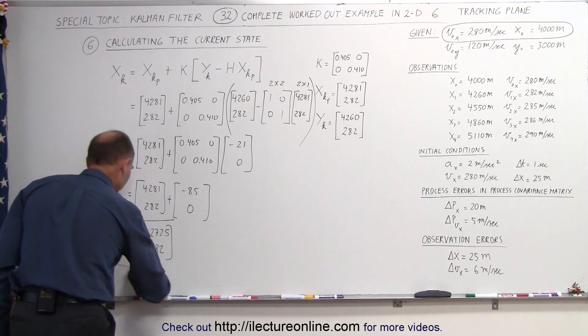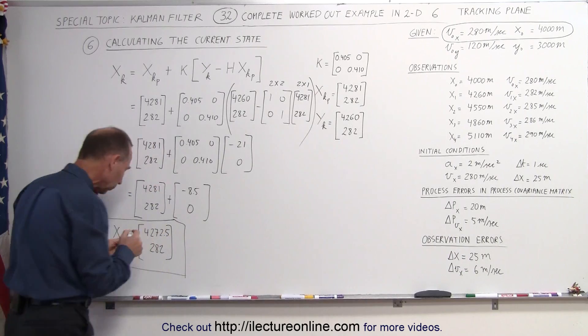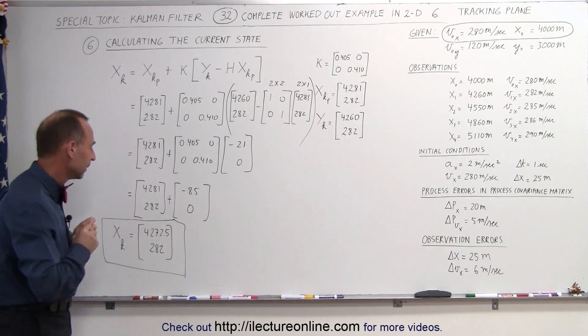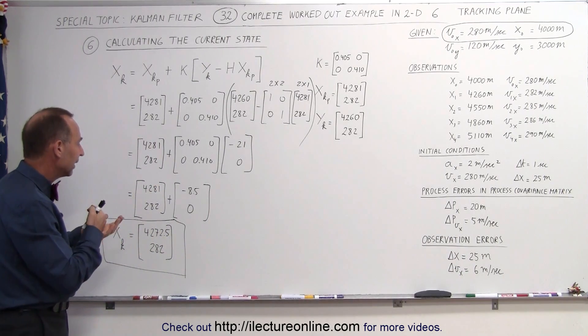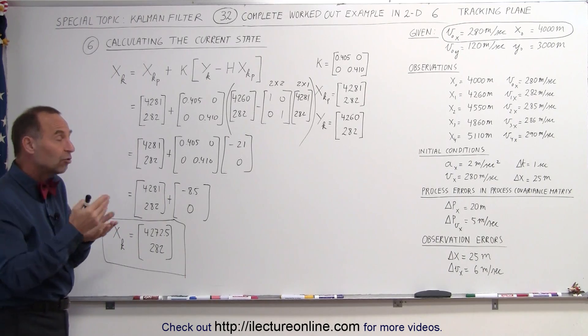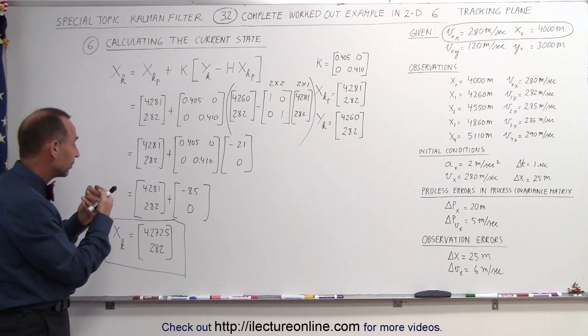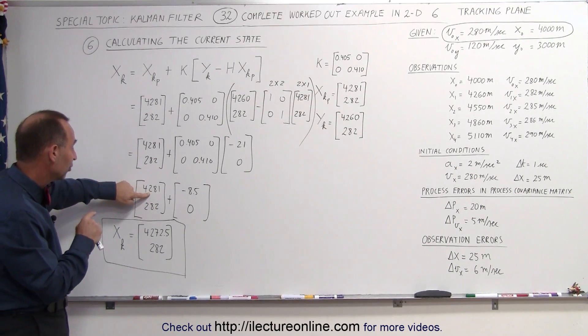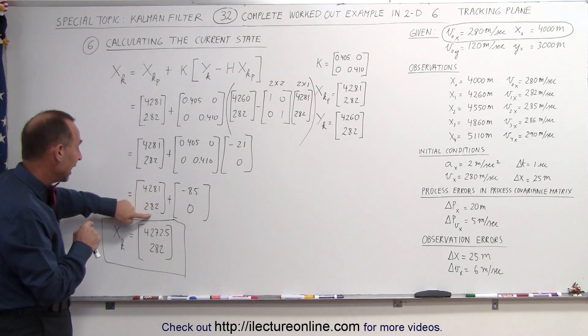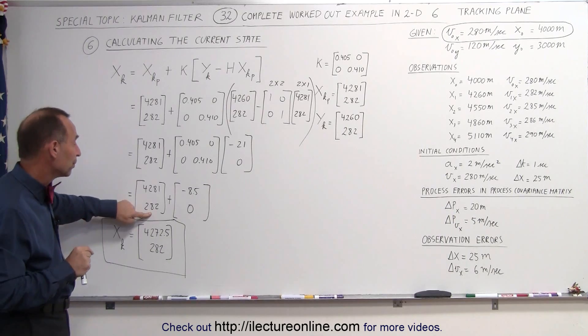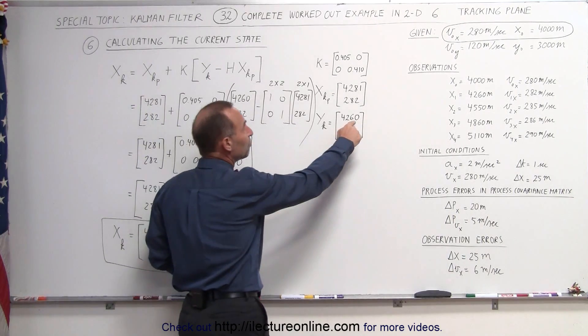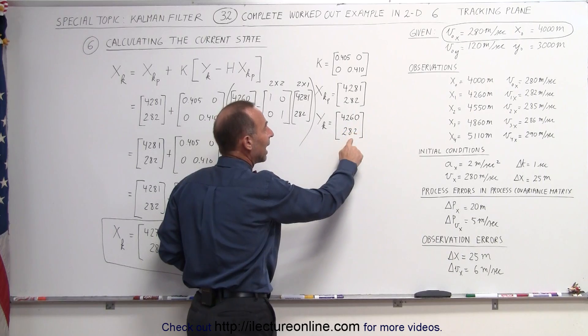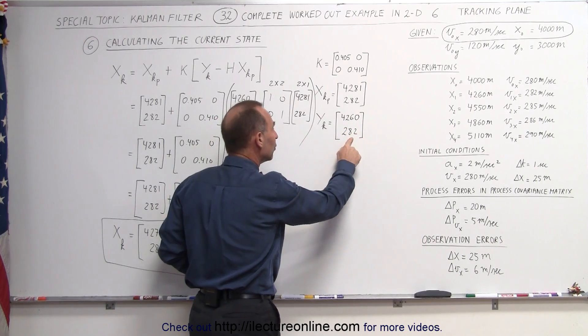That's a very important result right here. What does this mean? Let's take a look at it. Notice that based upon the equation that we have, based upon the predicted state we came up with, we estimated that the airplane would be at a position of 4,281 meters and with a velocity of 282. However, the measured values were that it was measured to be at 4,260 and the velocity was 282.